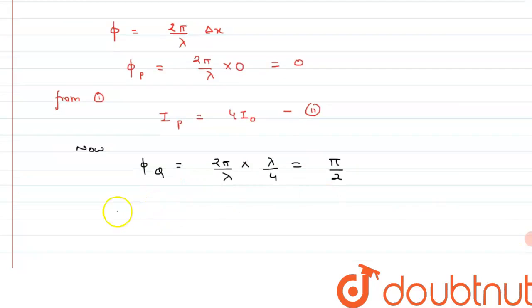Substituting this value into equation 1, the intensity at point Q, I_Q = 4I₀ cos²(π/4). Since cos(π/4) = 1/√2, squaring it gives us 1/2. Therefore, I_Q = 2I₀. This is equation 3.